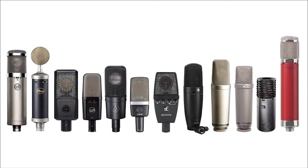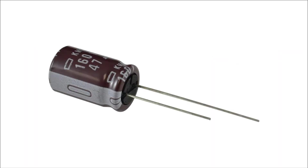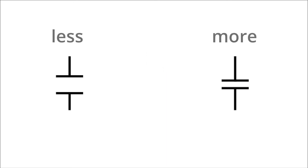Another common microphone you will come across is a condenser microphone. These are based on the electrical component known as a capacitor, which used to be called condensers. A capacitor contains two charged plates which are separated by a small air gap. A charge can be stored across the plates, but this depends on the distance between them — the further apart the plates are, the less charge can be stored.